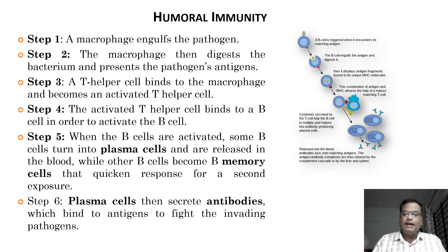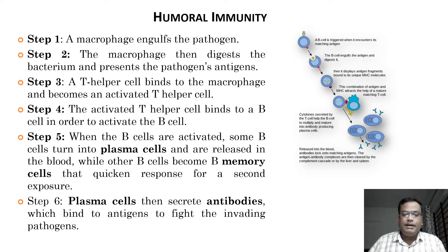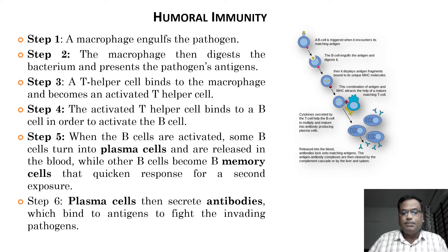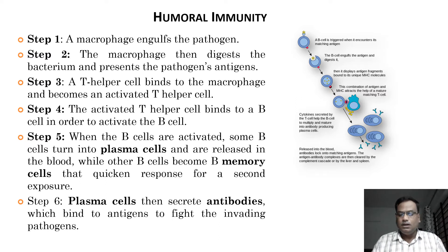Once the B cell receives the antigen information from the T helper cell, it starts proliferating and multiplying in very large numbers. These activated B cells differentiate into plasma cells, which are released into the blood and start secreting specific antibodies against the pathogen's antigen. In the final step, the plasma cells' antibodies destroy the pathogen. This is the humoral type of immunity.